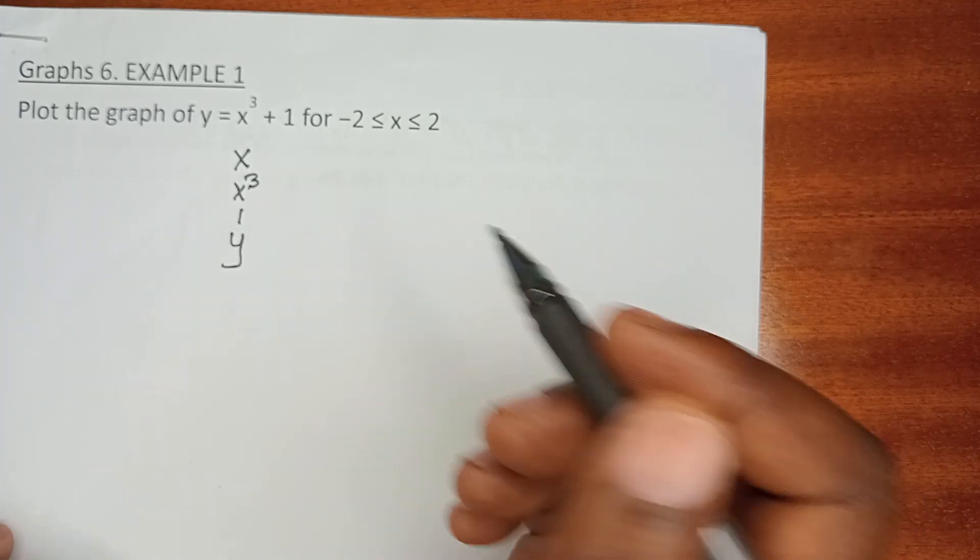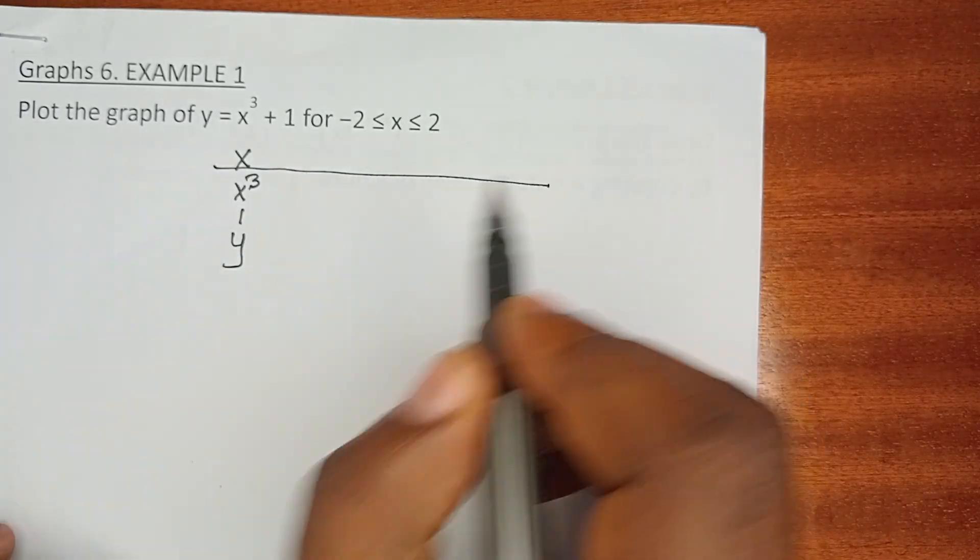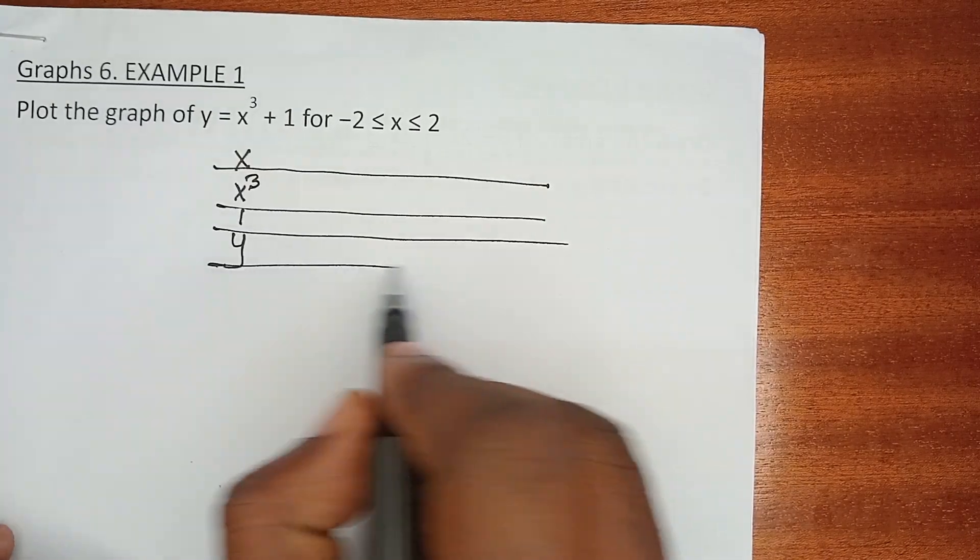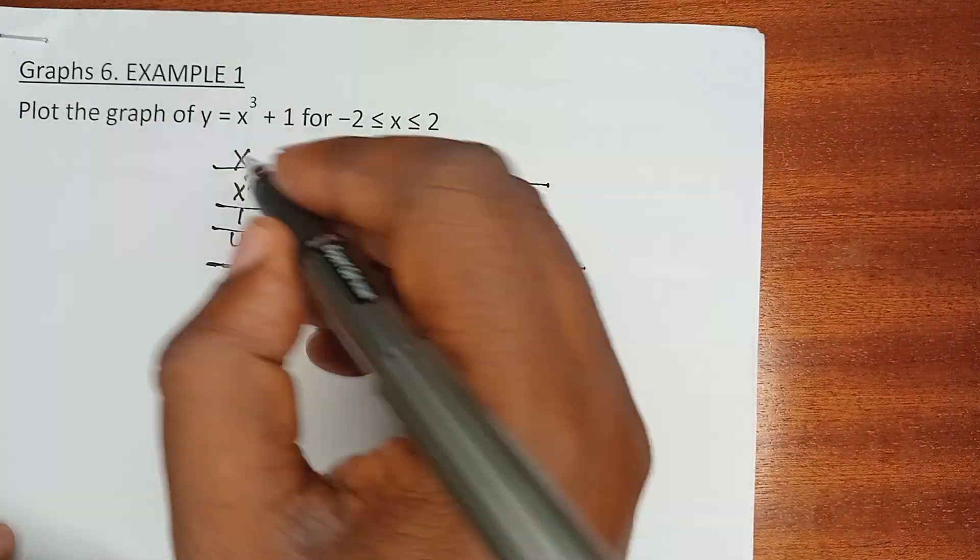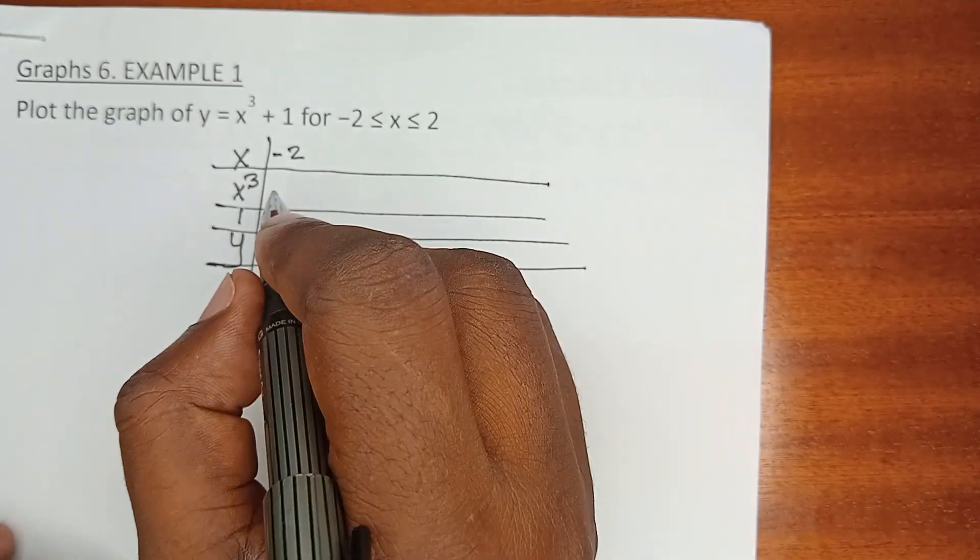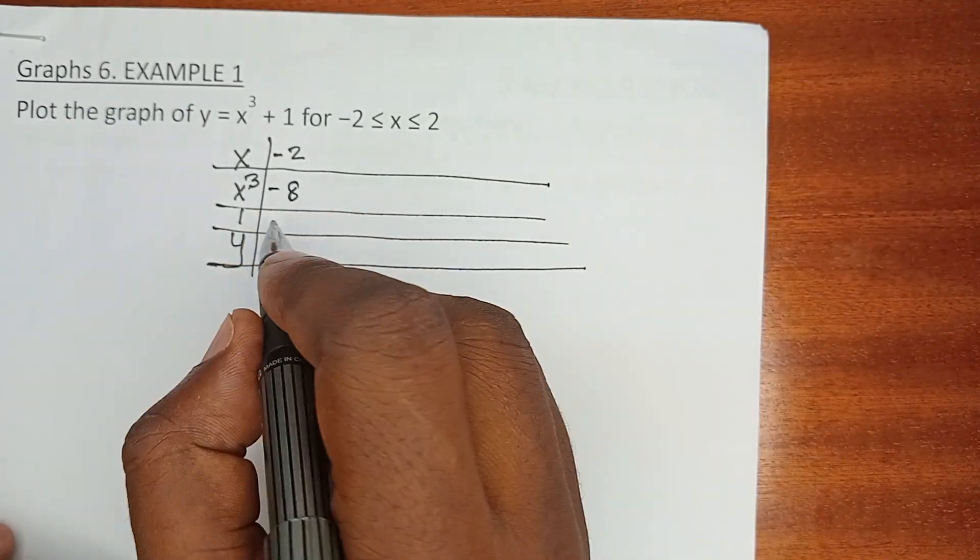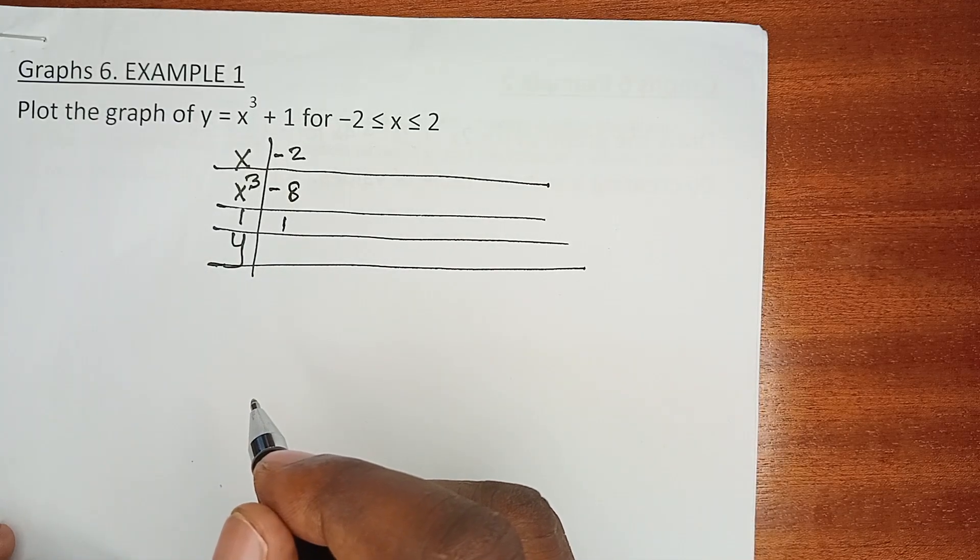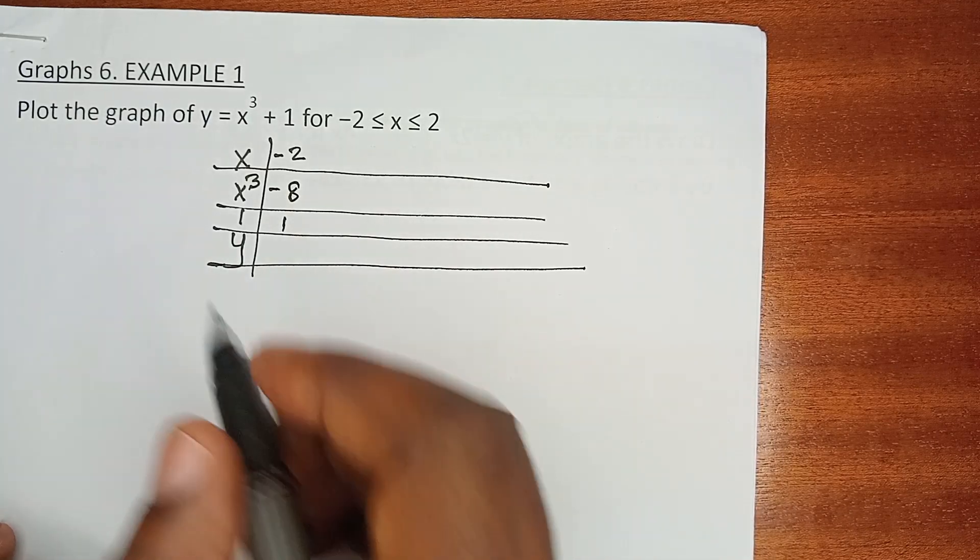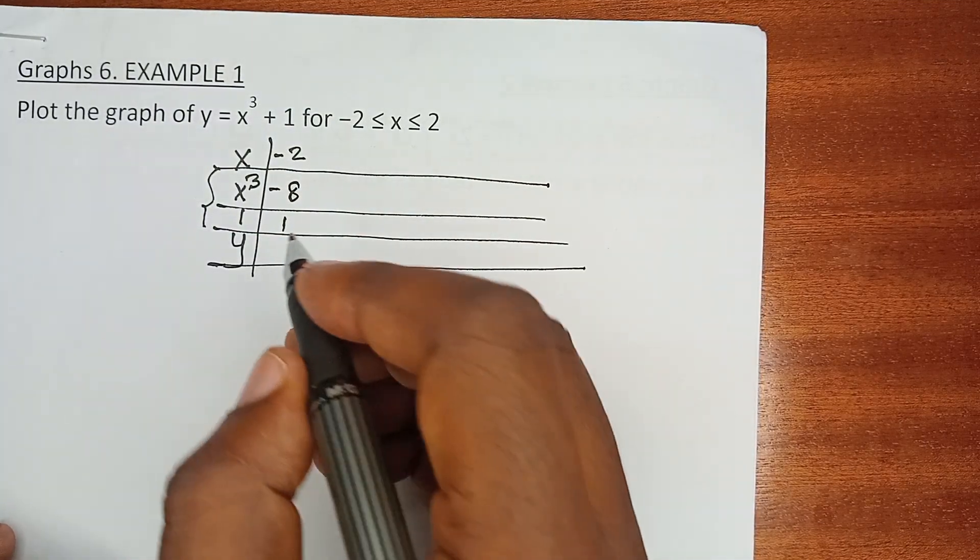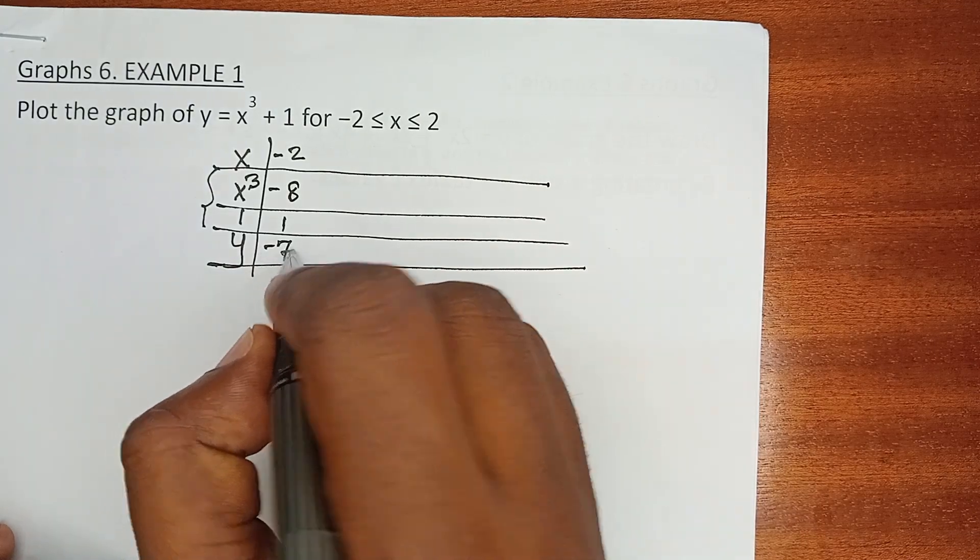And therefore, we have to have the columns: x cubed, what is 1, and what is finally y. So when x is negative 2, x cubed becomes minus 8, 1 remains 1, and you realize that y equals x cubed plus 1. So the sum of these two rows, minus 8 plus 1, we have minus 7.